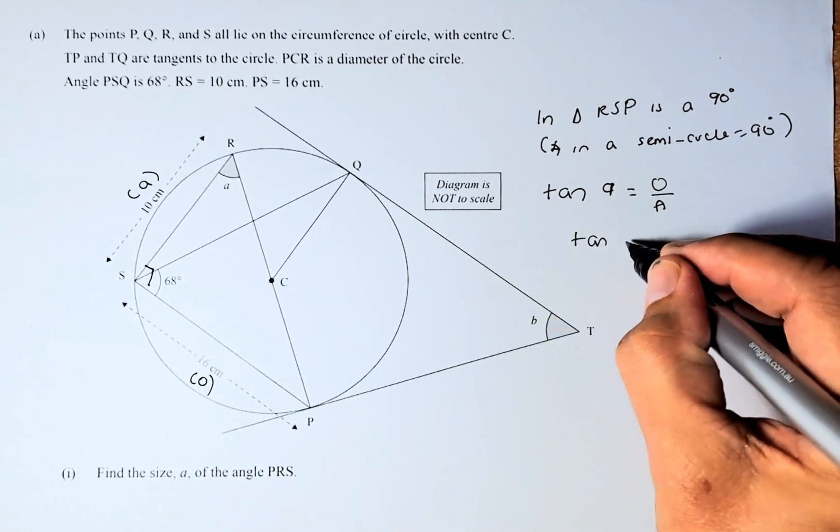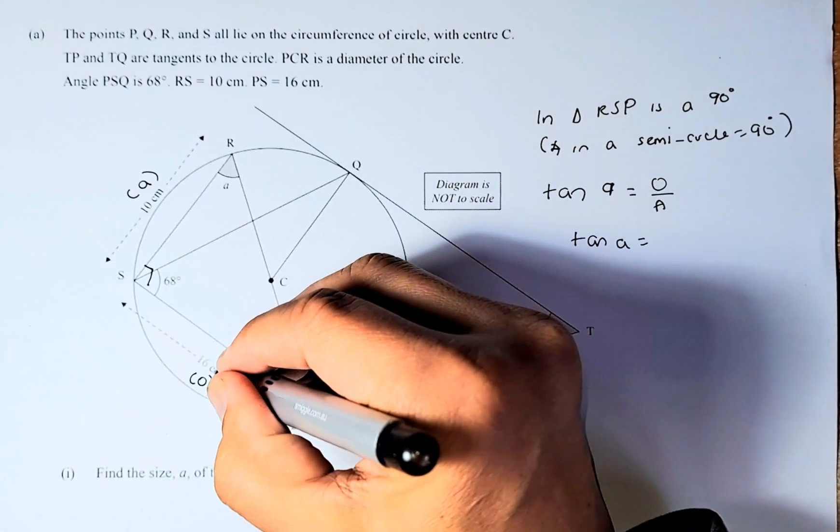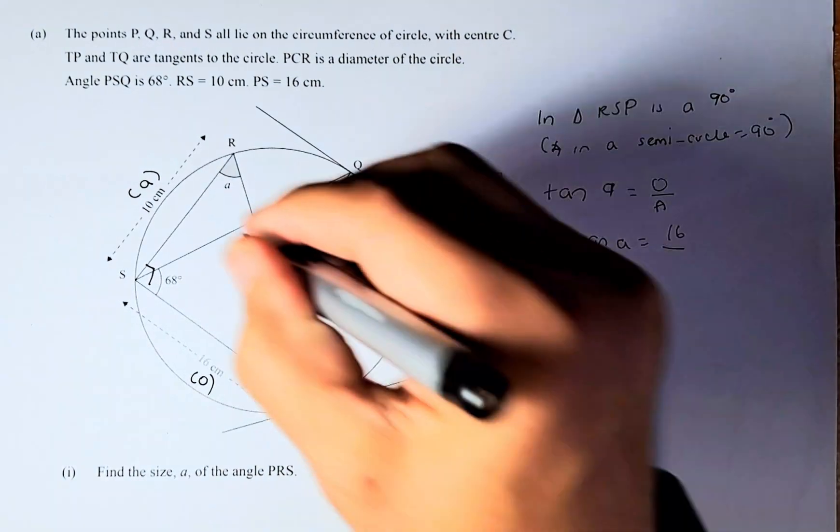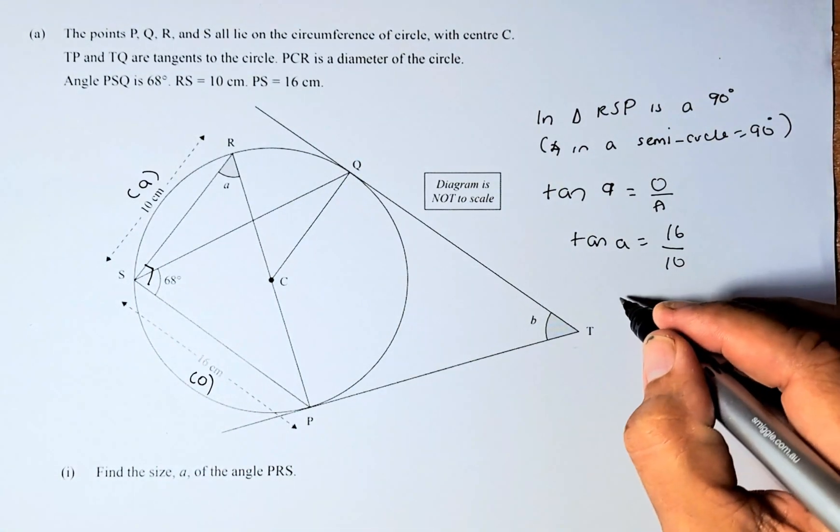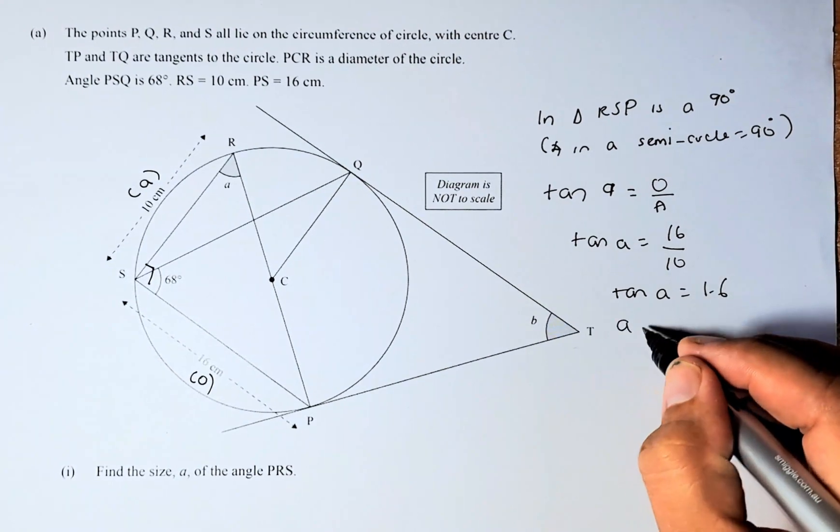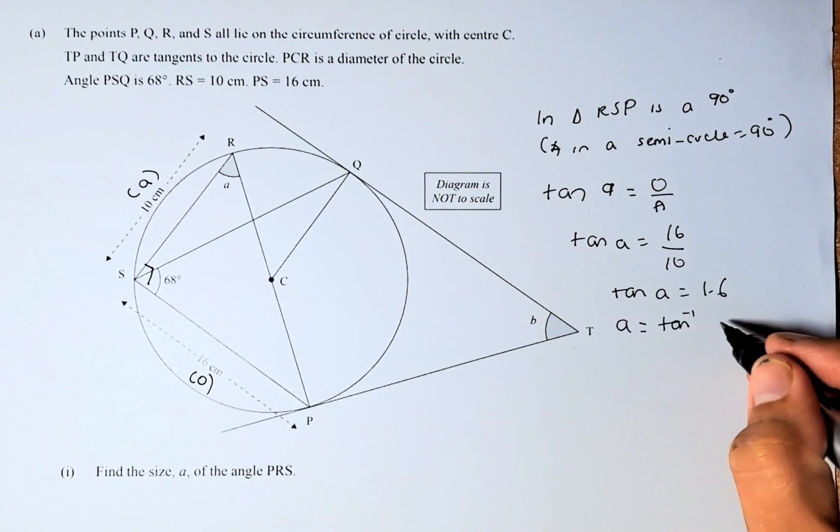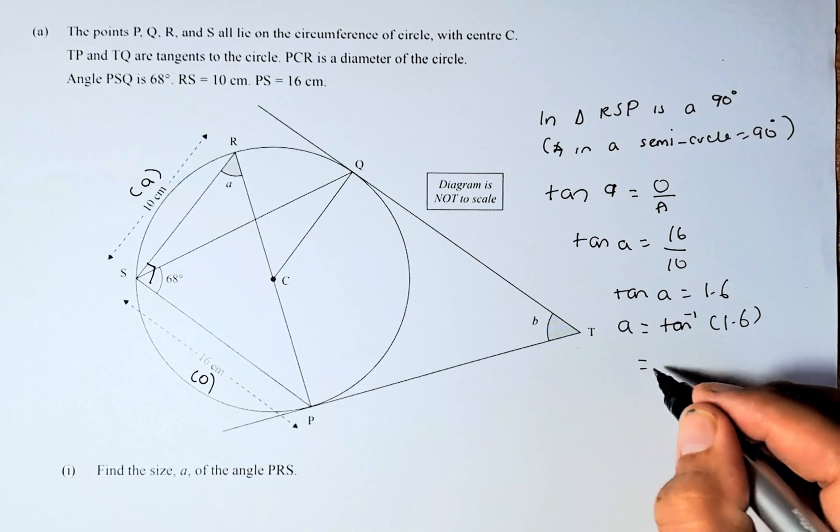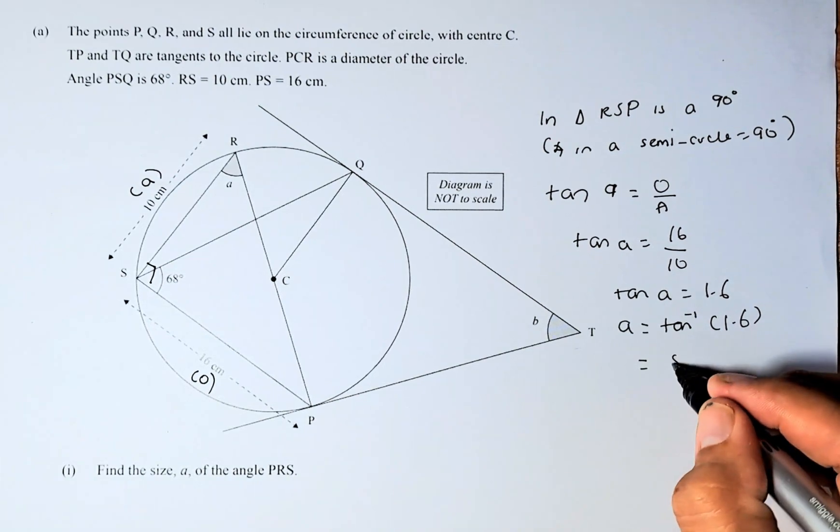So tangent A equals, the opposite is going to be 16, and the adjacent is going to be 10. Tangent A equals 1.6. To calculate A, you just do tangent inverse of 1.6, and the answer is going to be 58 degrees.